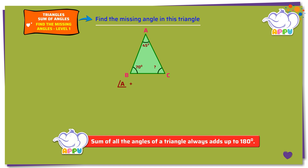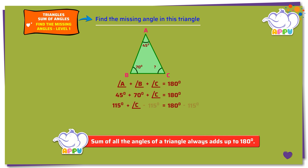Angle A plus angle B plus angle C equals 180 degrees. 45 degrees plus 70 degrees plus angle C equals 180 degrees. 115 degrees plus angle C equals 180 degrees. Next, we subtract 115 degrees from both sides. We get angle C equals 180 degrees minus 115 degrees, that is equal to 65 degrees. The missing angle is 65 degrees.